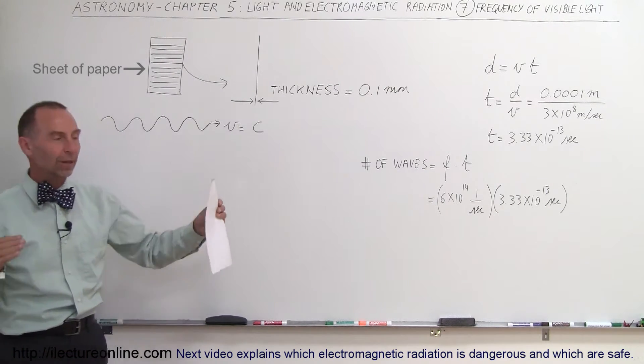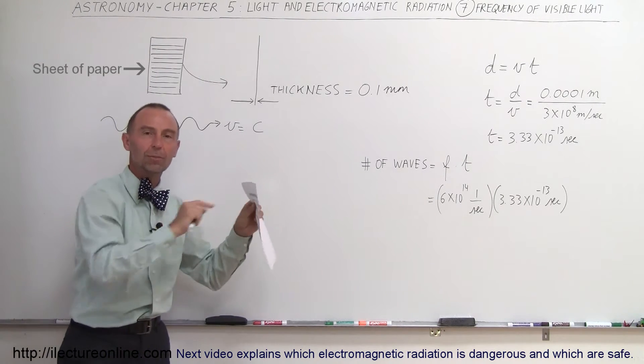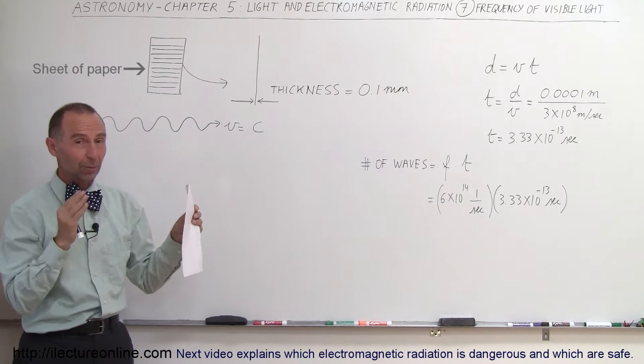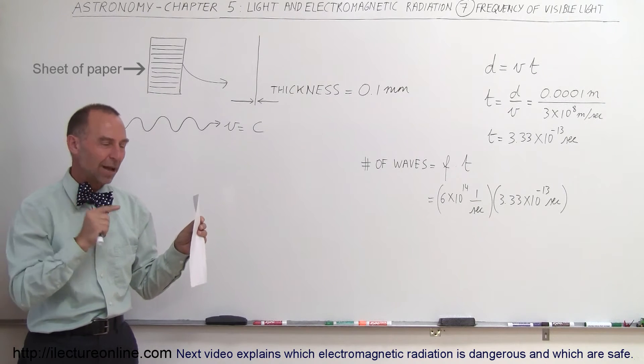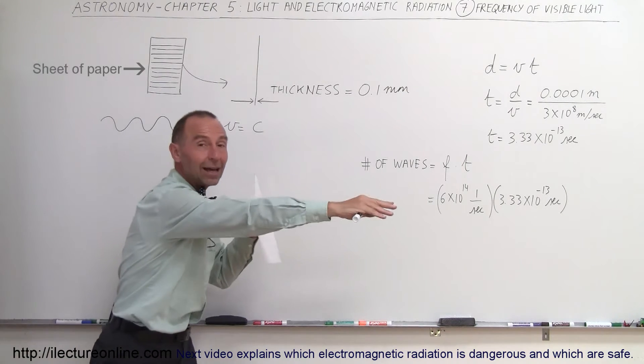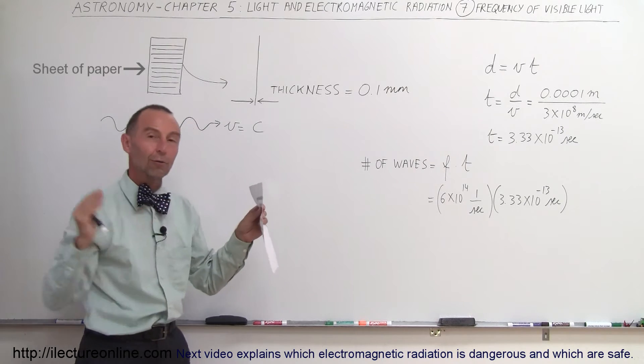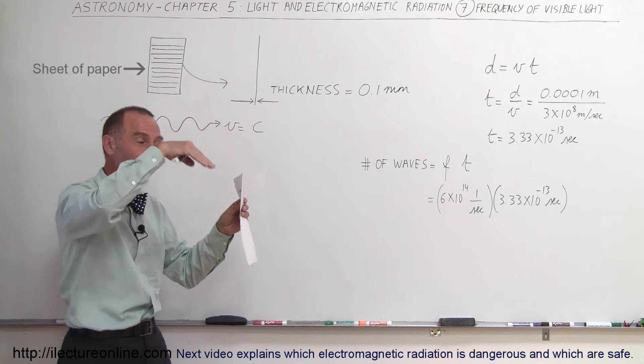And now imagine visible light, a ray of visible light traveling through space past this piece of paper. Now imagine the speed of visible light is 186,000 miles per second or 300,000 kilometers per second. So imagine how little time light would spend traveling past the thickness of the piece of paper. Of course, you know that light will vibrate as it does so.